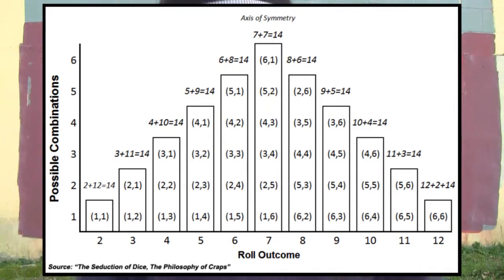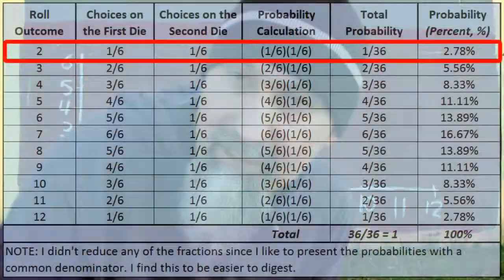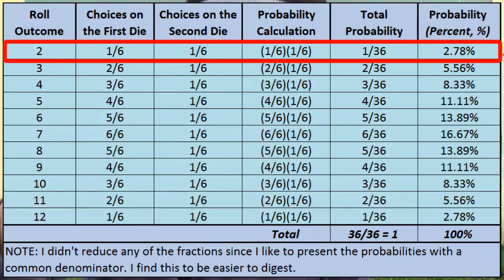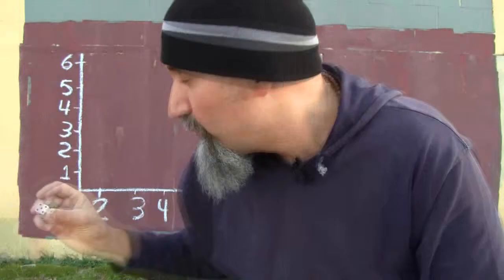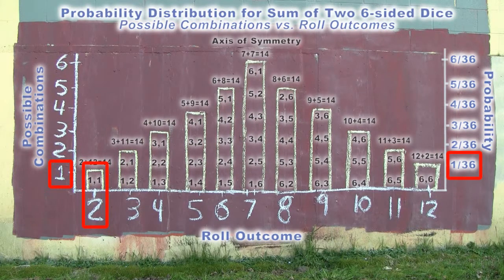For the number two, there's only one way you can get it. You need to get the number one on the first die and the number one on the second die. When it comes to probabilities like that, you multiply the two probabilities together. You need one out of six on the first die and one out of six on the second die, which gives us one out of 36. The probability of getting a two with two six-sided dice is 1/36, and there's only one combination.